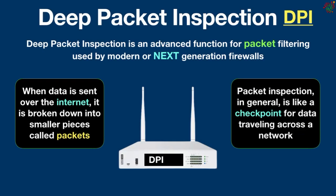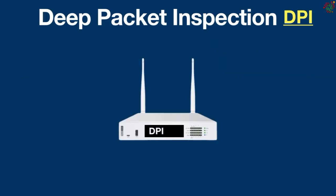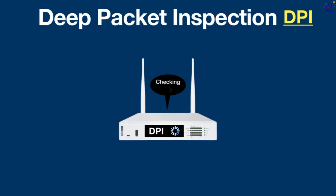Deep packet inspection works by examining the contents of data packets passing through a given checkpoint and making real-time decisions depending on what a packet contains, based on rules assigned by your internet service provider or a network administrator. If it finds any content that is forbidden, it denies access and blocks the traffic.